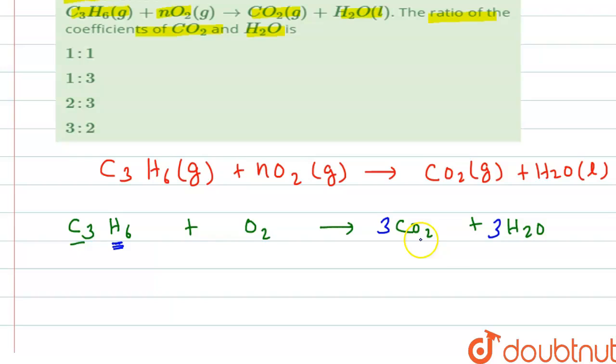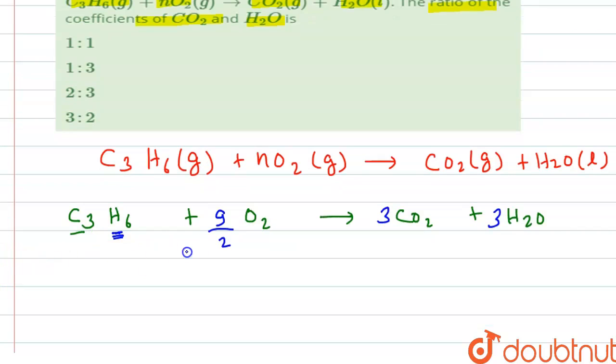Now we have to balance the oxygen. The total oxygen on the right-hand side is 3 times 2 equals 6, plus 3 equals 9. Here we have 2 molecules, so if we multiply by 9/2, the overall reaction is balanced.